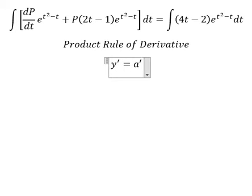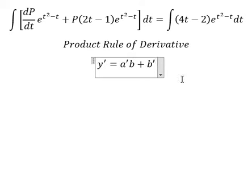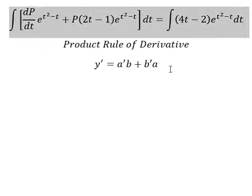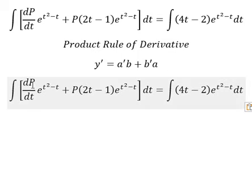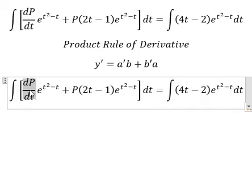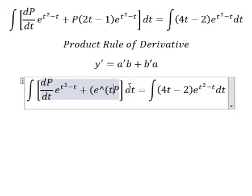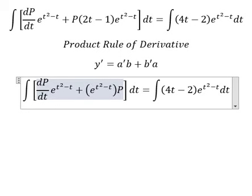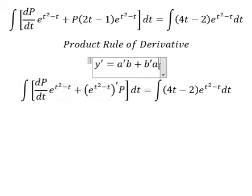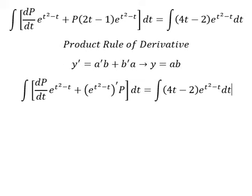Next, we can apply the product rule of the derivative. The first derivative of y equals the first derivative of a multiplied by b, plus the first derivative of b multiplied by a. Looking carefully, we identify the first derivative of a multiplied by b, and the first derivative of b multiplied by a. Integrating both sides, we get y equals a times b.